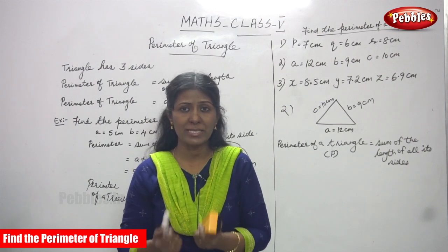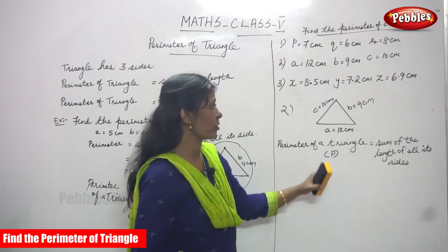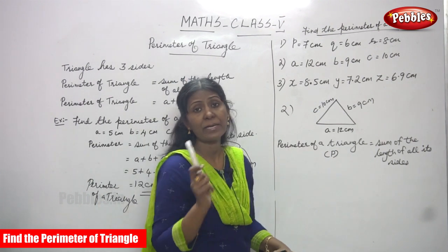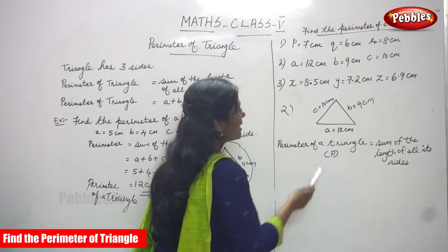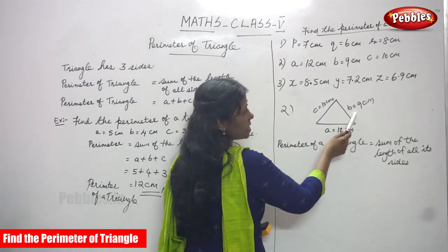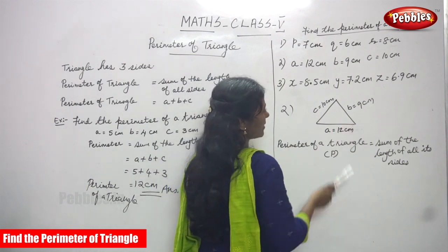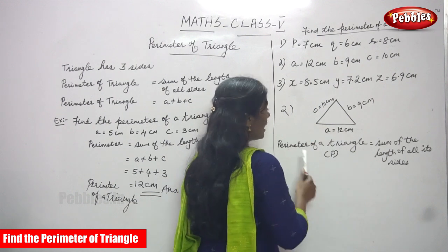Now we are going to do this sum again. Find the perimeter of a triangle. The values are given: A is equal to 12 cm, B is equal to 9 cm, C is equal to 10 cm.